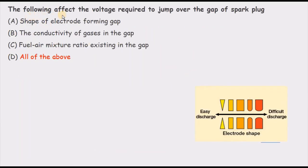The next question is: which of the following affects the voltage required to jump over the gap of a spark plug? Options are: shape of the electrode, conductivity of the gases, fuel-air mixture ratio, or all of the above. The shape of the electrode clearly affects discharge — with certain shapes discharge is difficult, while with others the spark jumps more easily.